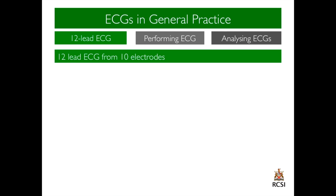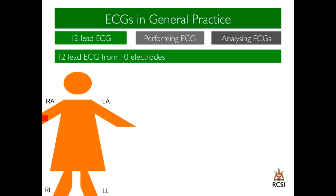A 12-lead ECG is made from 10 electrodes placed on the skin. Like a traffic light, a red, yellow and green electrode is placed on the right arm, left arm and left leg. And a fourth electrode is placed on the right leg.